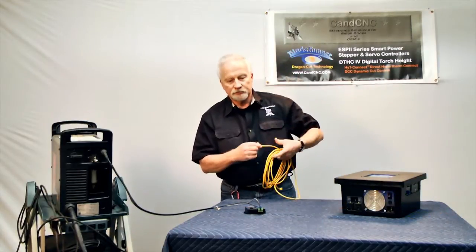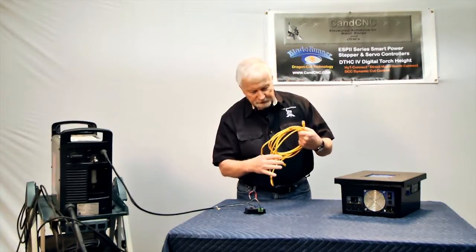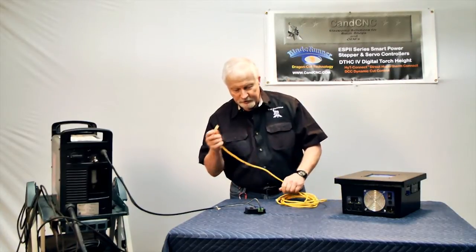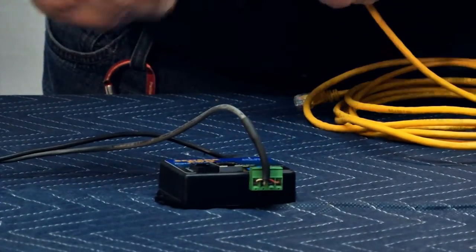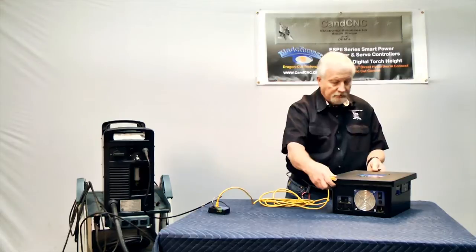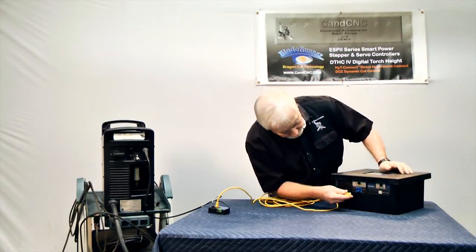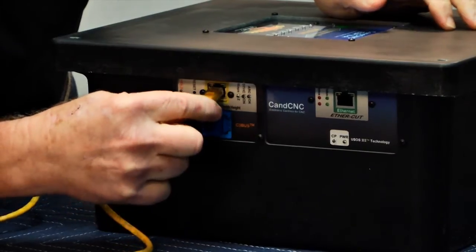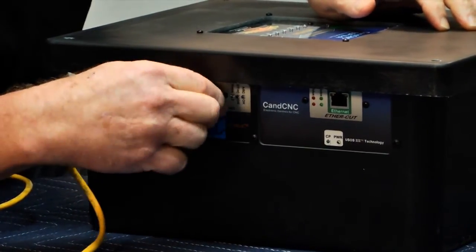That, in turn, can be connected 25 to 50 feet away from the actual torch height control, which plugs in right here. Here's our controller. Here is the inlet for our torch height control. It plugs in right here.